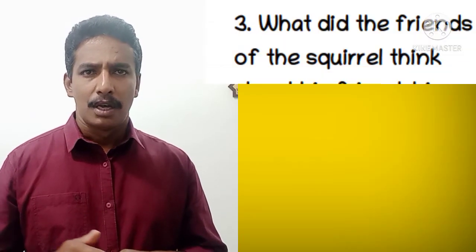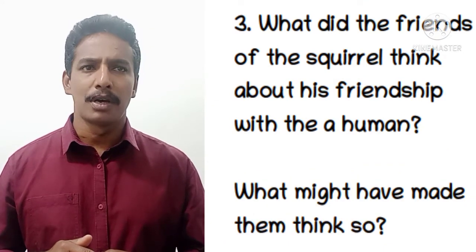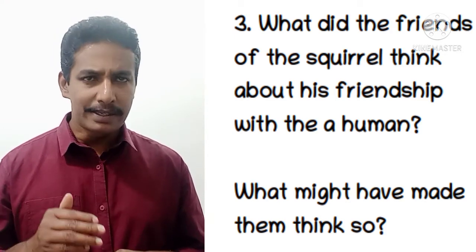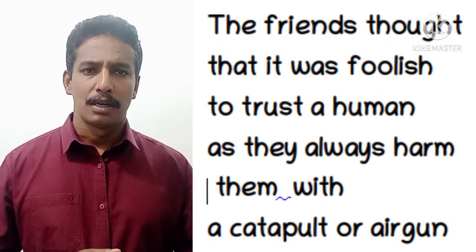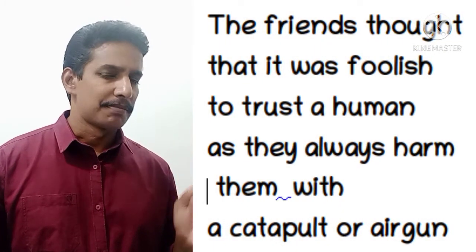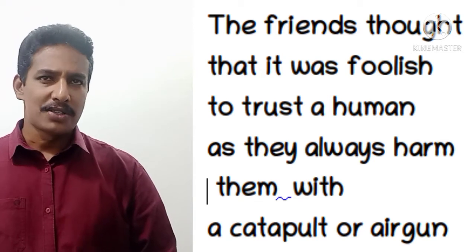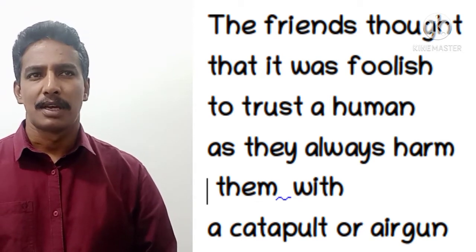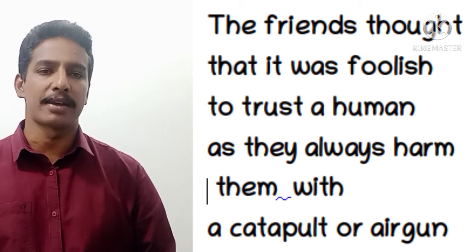Let's see the next question: What did the friends of the squirrel think about his friendship with a human, and what might have made them think so? The friends thought it was foolish to trust a human, as humans always hung around with a catapult or air gun.